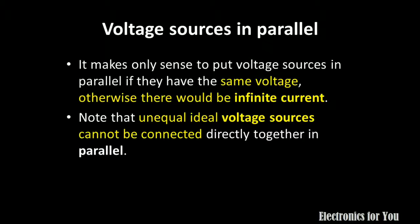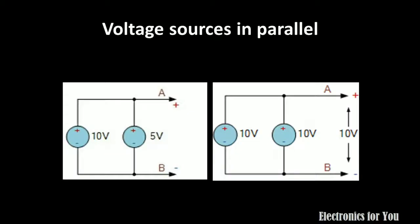The next topic is voltage sources in parallel. If two unequal ideal voltage sources are connected in parallel, it is not allowed. For example, connecting a 10-volt source and a 5-volt source in parallel is not allowed because these are unequal voltages. The 5-volt supply would act as a short circuit, causing a huge current to flow and resulting in zero voltage across the terminal.